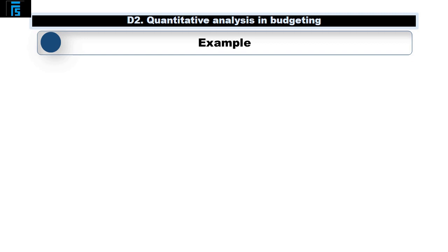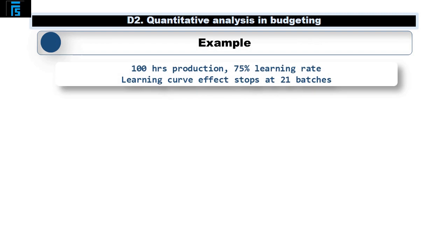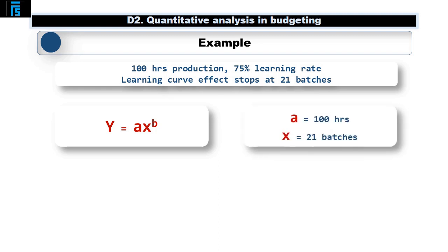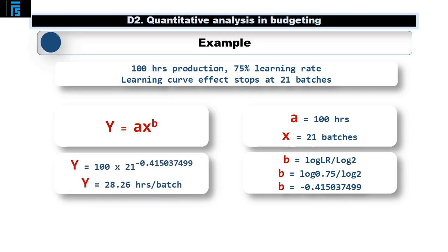We can demonstrate this steady state scenario with a numerical example. In this example, the first batch of a new product took 100 hours to produce, with a learning rate of 75%. If the learning curve effect effectively stops at 21 batches, what time per batch should we use in budgets for the future batches? We can use the formula already covered to help with this. In this scenario, a is 100 hours and x is 21 batches. b will be log(0.75) / log(2), which is -0.415037499. Putting the formula together therefore gives us 100 × 21^(-0.415037499). The answer will therefore be 28.26 hours per batch and a total time of 593 hours, calculated as 28.26 hours multiplied by 21 batches.